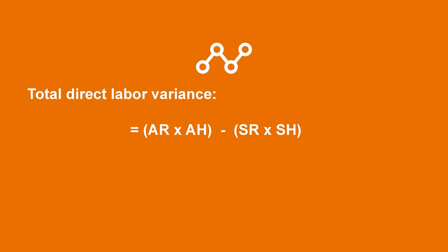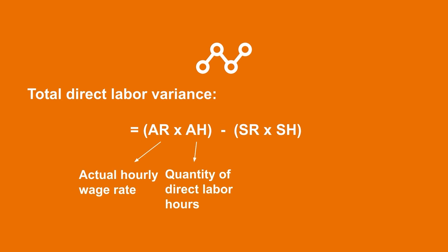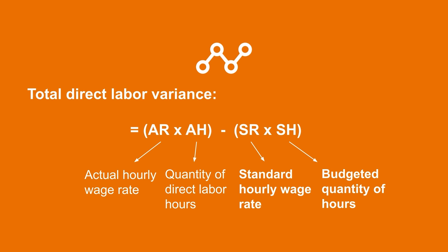The starting point for a direct labor variance analysis will be to calculate the total direct labor variance. This is done by comparing the actual cost of the direct labor to the budgeted amount that the company was planning to spend. The actual cost is calculated by taking the actual hourly wage rate, or AR, times the actual quantity of direct labor hours used, denoted by AH. The planned cost is calculated by taking the standard, or budgeted hourly wage rate, or SR, times the budgeted quantity of hours — standard hours — denoted as SH.